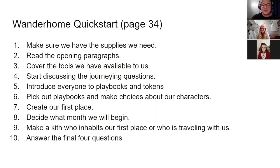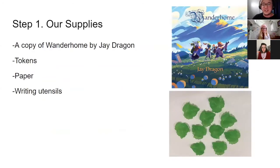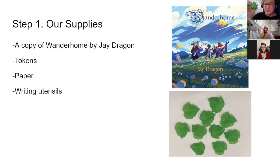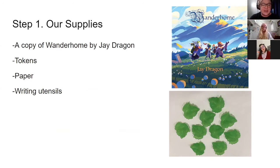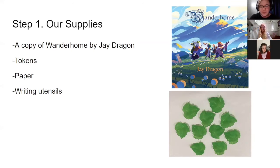To guide our journey, we are going to be using the quick start steps that you'll find on page 34 of Wander Home. We will walk through each step to model how you can start your own game. So let's get started with our supplies. We have a copy of Wander Home which we'll be referencing along the way, and we'll also have tokens. These are the tokens that come with the Wander Home kit at the library, but you can use any small object to represent tokens. You can even keep track of tokens with pencil and paper, which are the other supplies that we're going to have as we play, because we may want to record our journey with words or pictures as we go along.